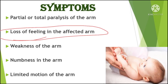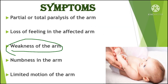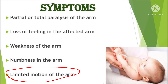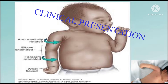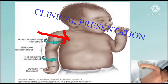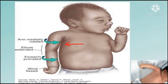Symptoms of Erb's palsy include partial or total weakness of the arm, loss of feeling in the arm, weakness, numbness, and limited motion. Clinically, the newborn will present with the limb kept in a waiter's tip position: shoulder adducted, arm medially rotated, elbow extended, forearm pronated, and wrist flexed.